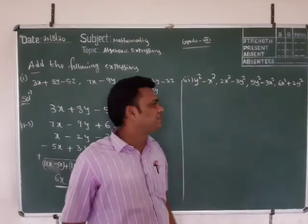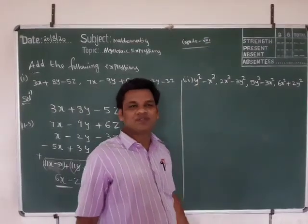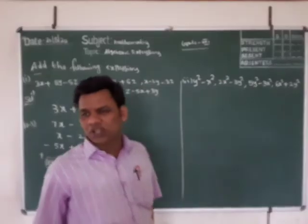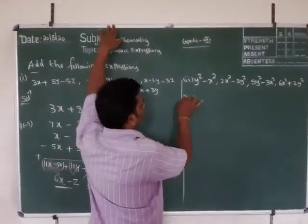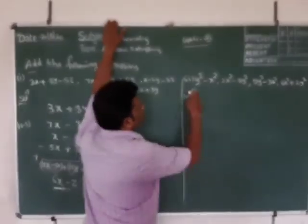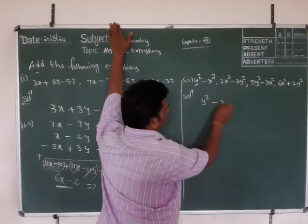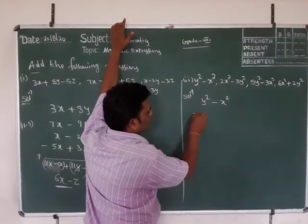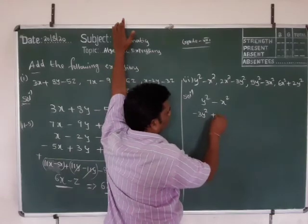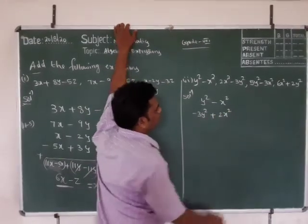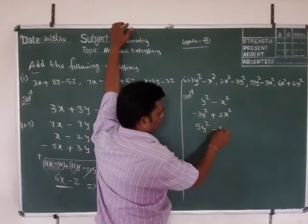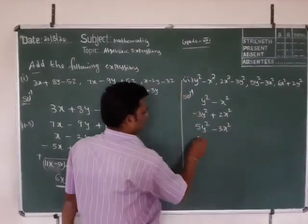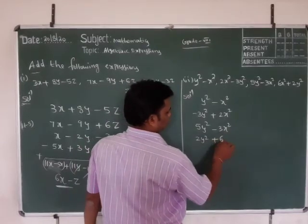Now see here: y squared minus x squared, 2x squared minus 3y squared, 5y squared minus 3x squared, 6x squared plus 2y squared. We can do the row method also. Using the column method: y squared minus x squared, then minus 3y squared plus 2x squared, then 5y squared minus 3x squared, then plus 2y squared plus 6x squared.